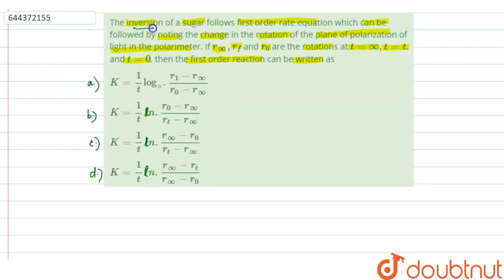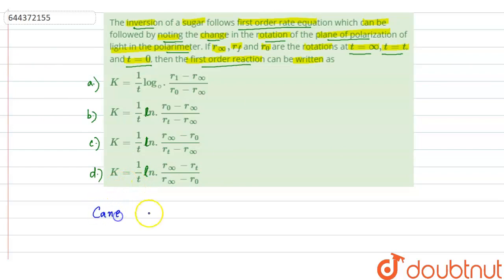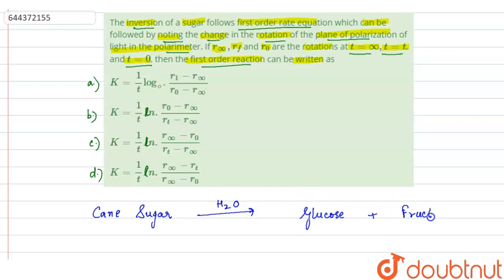In this problem, the inversion of sugar follows a first order rate equation, noted by the change in rotation of the plane of polarization of light in a polarimeter. The rotations at t = infinity, t = t, and t = 0 are r-infinity, r-t, and r-0. If we take cane sugar, when its hydrolysis is done, we get glucose and fructose — this process is known as the inversion of cane sugar.